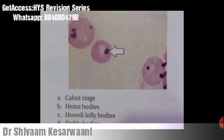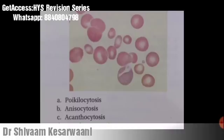This is an image of Heinz bodies. Heinz bodies, or Heinz-Ehrlich bodies, are inclusions within the RBC composed of denatured hemoglobin. They are composed of hemichrome — an oxidized form of hemoglobin that is unstable and rapidly precipitates. Heinz bodies are seen in G6PD deficiency, oxidant drugs, and unstable hemoglobin states.